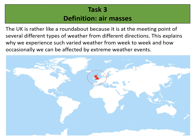Task three is one of our key word definitions. From the previous tasks, we can see the UK experiences very, very different weather. We already knew that because when we looked at climate graphs for the UK, it was clear that places like Dundee in Scotland had very different weather to places like London in the south east of England. And this is because of air masses.